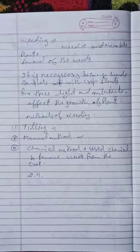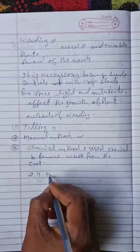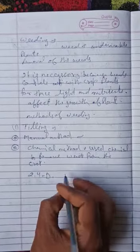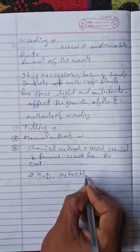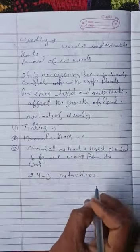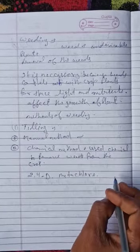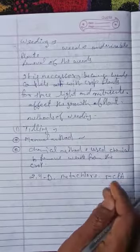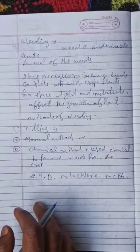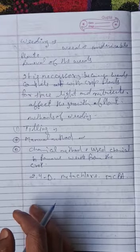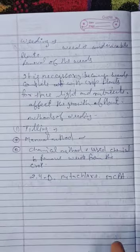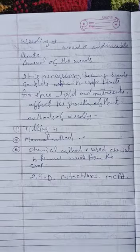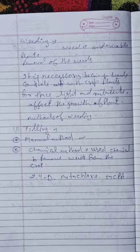Some weedicides are 2,4D, metachlor, MCPA, etc. Weedicides are diluted with water and sprayed on the field with the help of sprayer.